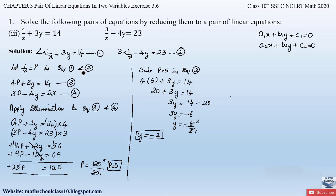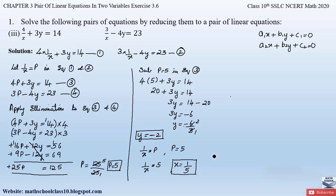We got y = −2. Now to find x, recall we had initially assumed 1/x = p, and we found p = 5. So 1/x = 5, which means x = 1/5. Therefore the two solutions for the given pair of equations are x = 1/5 and y = −2.